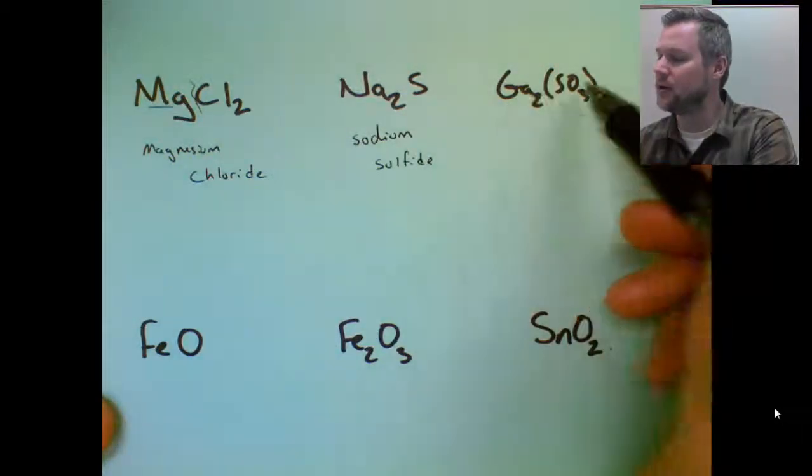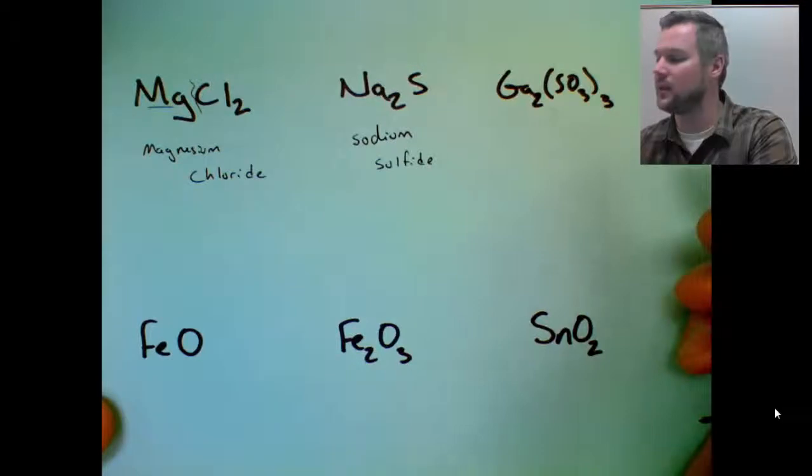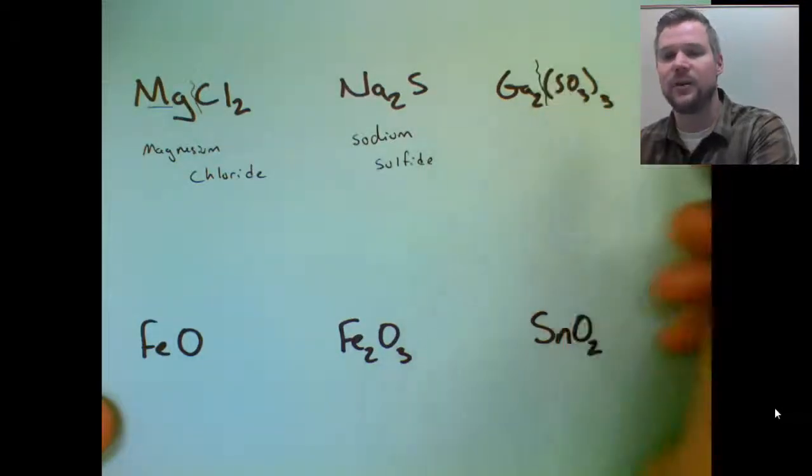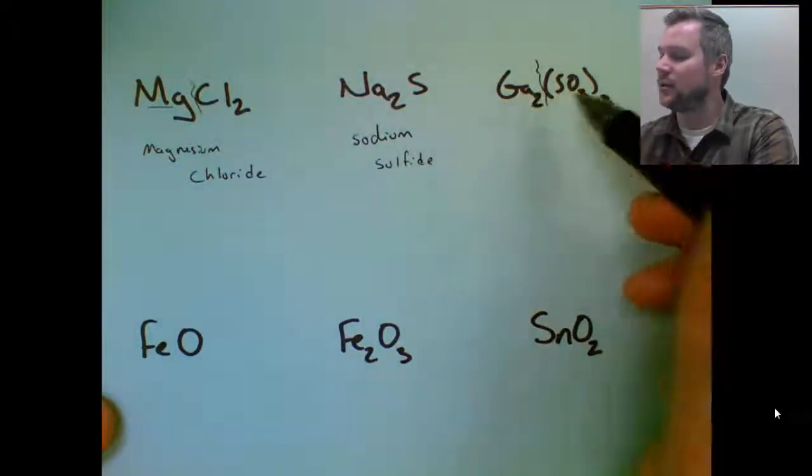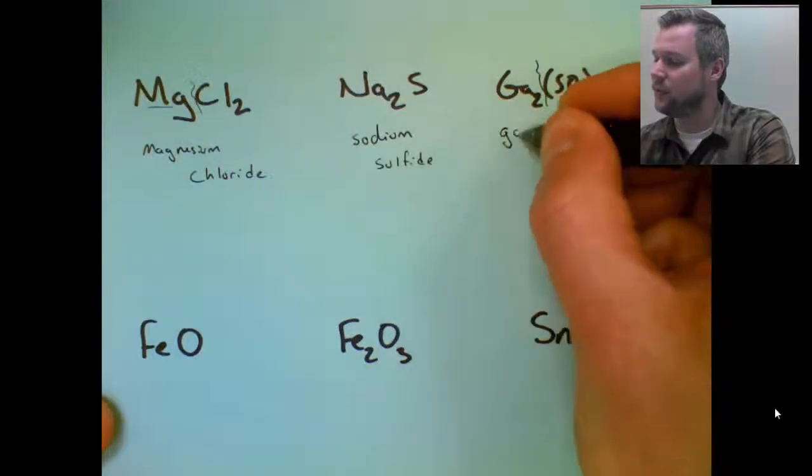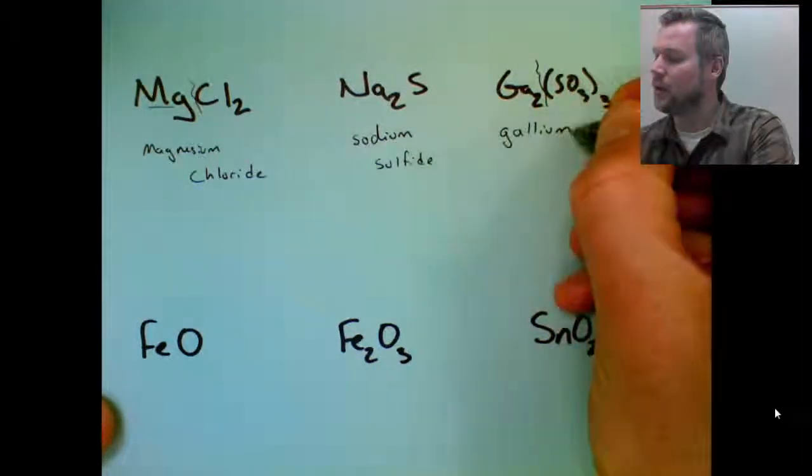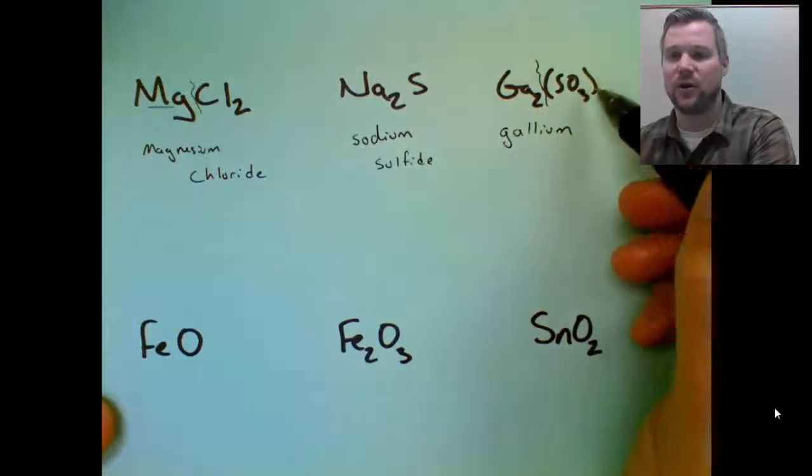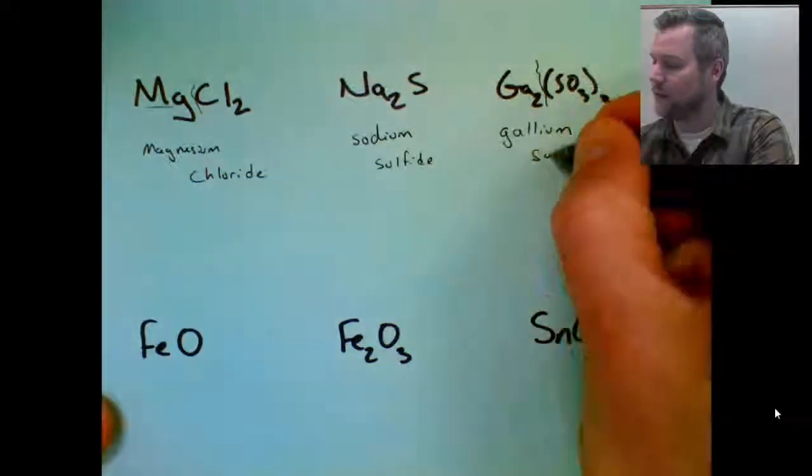Third substance, it doesn't start with hydrogen, but this does have three or more atoms, so that means it contains a polyatomic ion, split after the metal. GA is called gallium. Gallium doesn't take Roman numerals. The back end is called sulfite, so this is gallium sulfite.